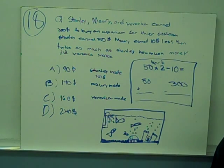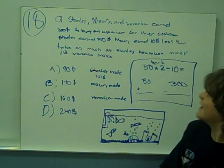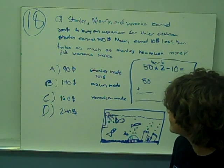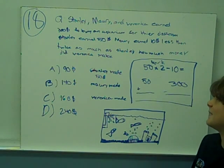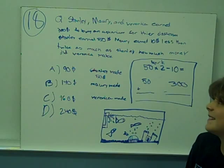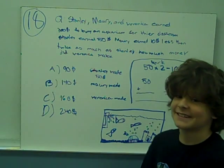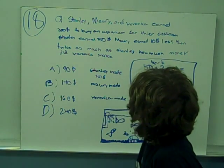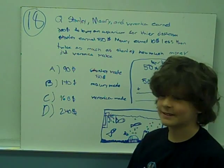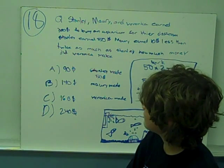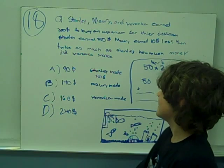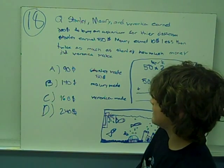I'm another member of the Compact Math class. The question is, Stanley, Murray, and Veronica earned $300 to buy an aquarium for their classroom. Stanley earned $50. Murray earned $10 less than twice as much as Stanley made. And how much money did Veronica make?